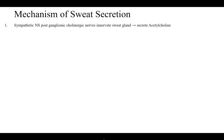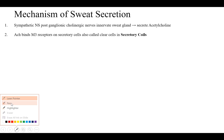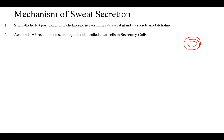The mechanism of sweat secretion: the sympathetic nervous system is stimulated, and post-ganglionic sympathetic nerves innervate sweat glands. They secrete acetylcholine, which binds M3 receptors on secretory cells — also called clear cells — located in the secretory coils. You can see the secretory coil in the dermis, with the ductile portion above it. The clear cells in the secretory coils have M3 receptors on them.